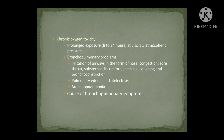In chronic oxygen toxicity, if a person is exposed to high atmospheric pressure for a long period — for example, 8 to 24 hours at 1 to 1.5 atmospheres — they develop bronchopulmonary problems: irritation of the airways in the form of nasal congestion, sore throat, substernal discomfort, sneezing, coughing, and bronchoconstriction.